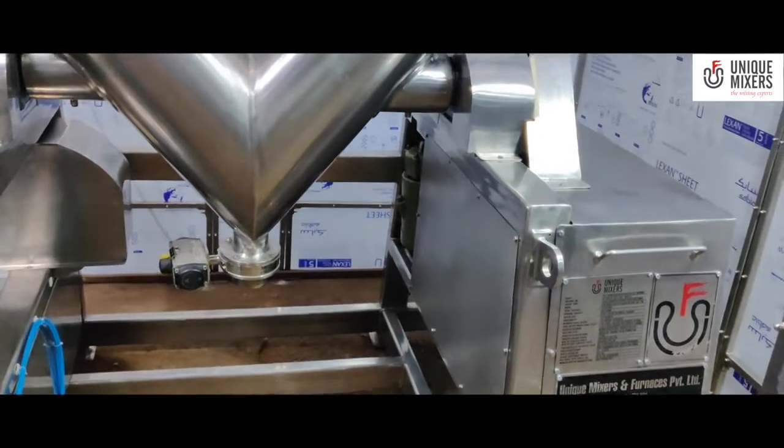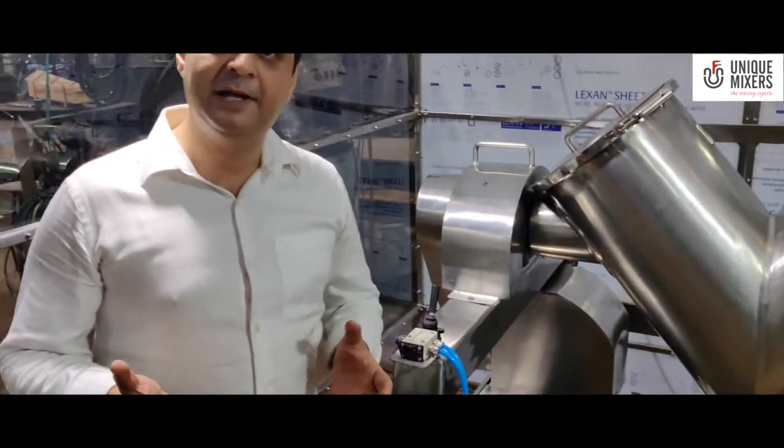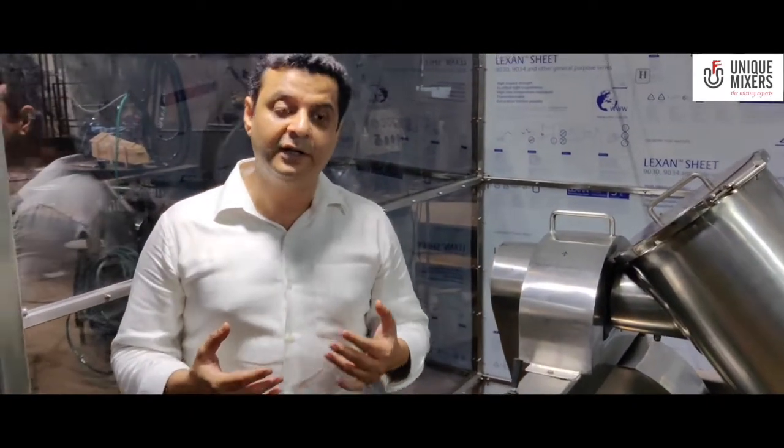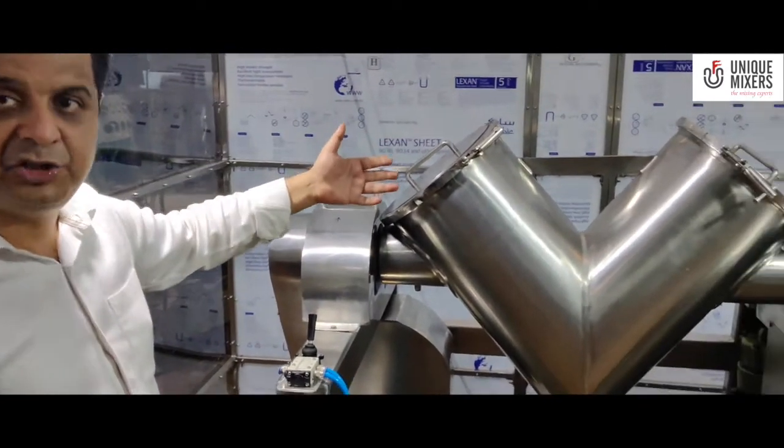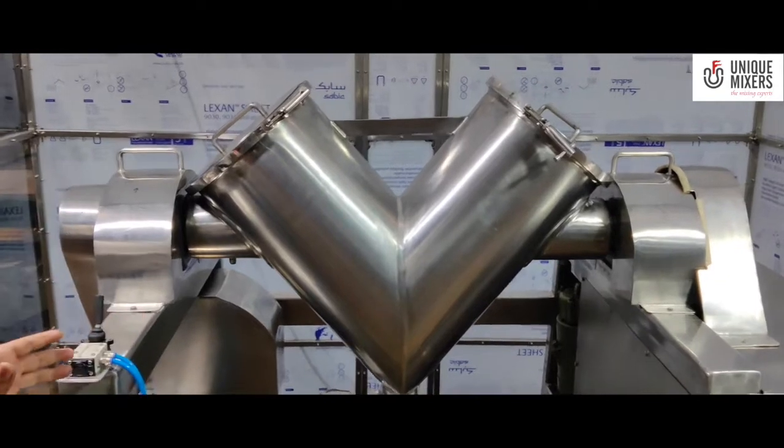So the V-blender primarily is a diffusion type of blender. It works on the principle of diffusion blending, and by the rotation of the shell there is a repeated converging and diverging action.